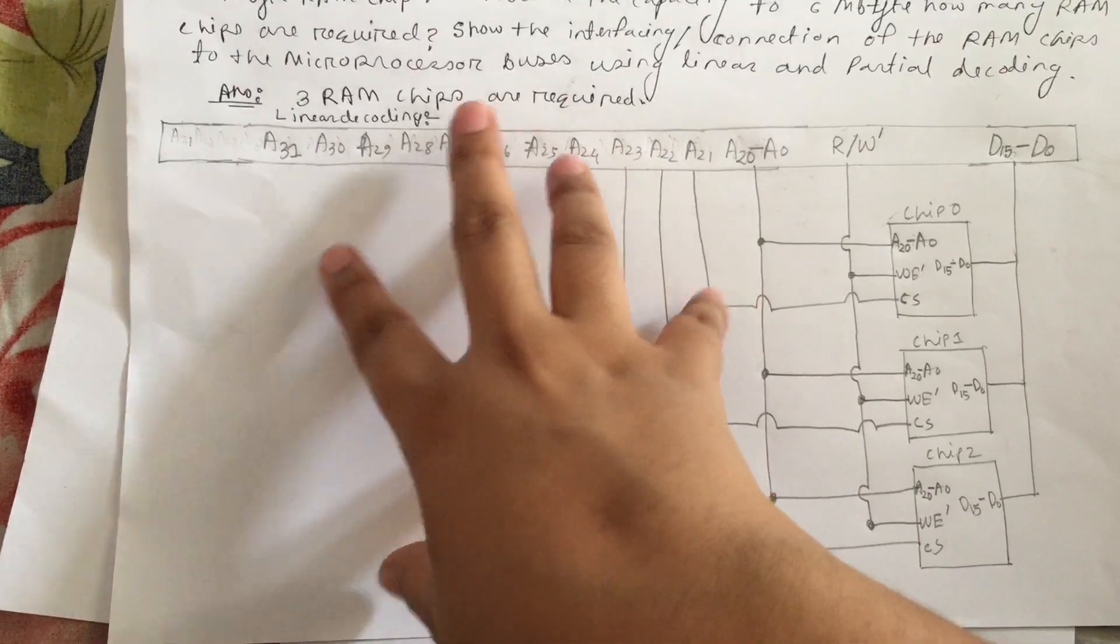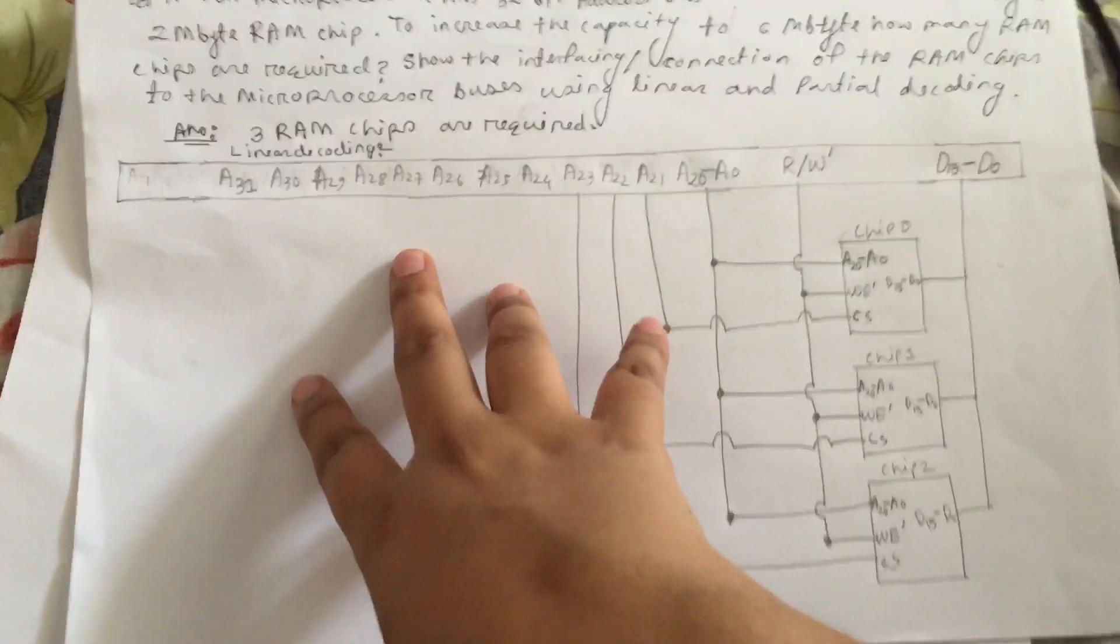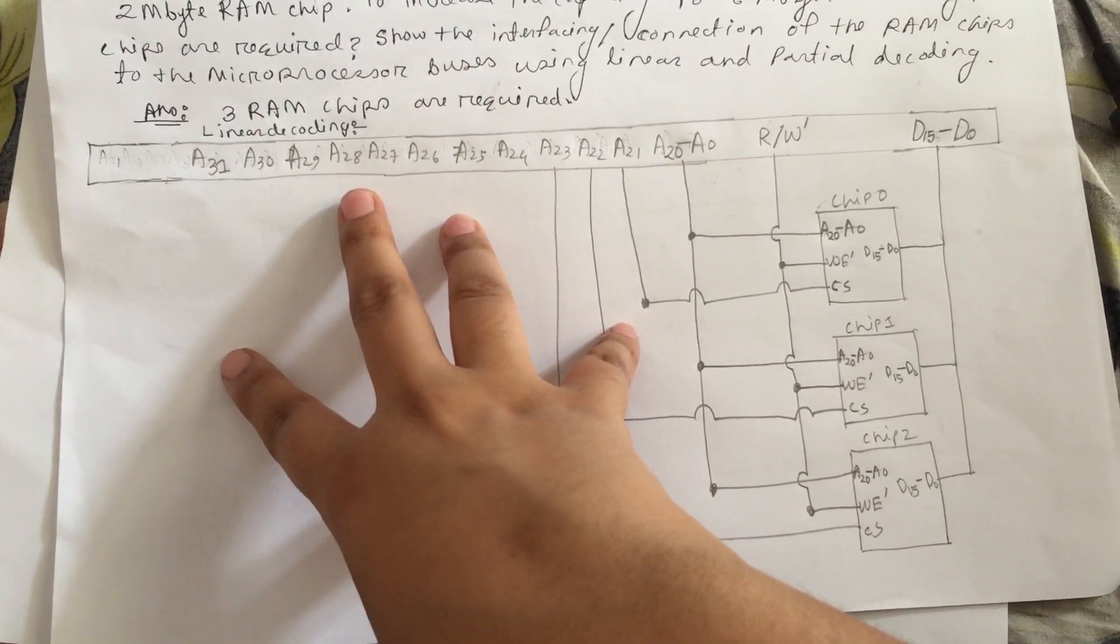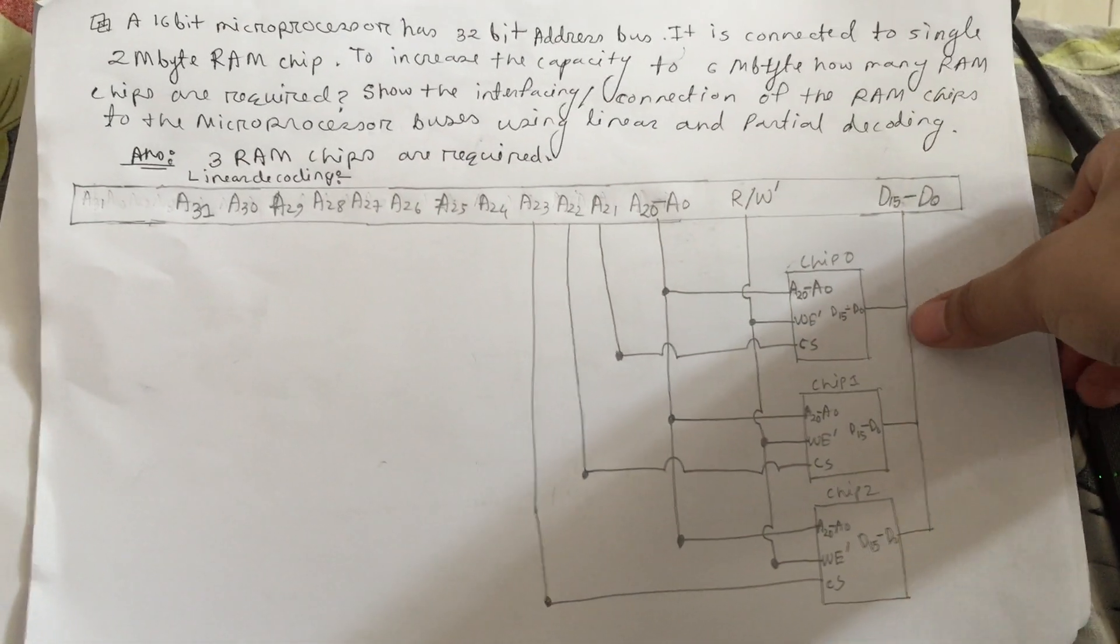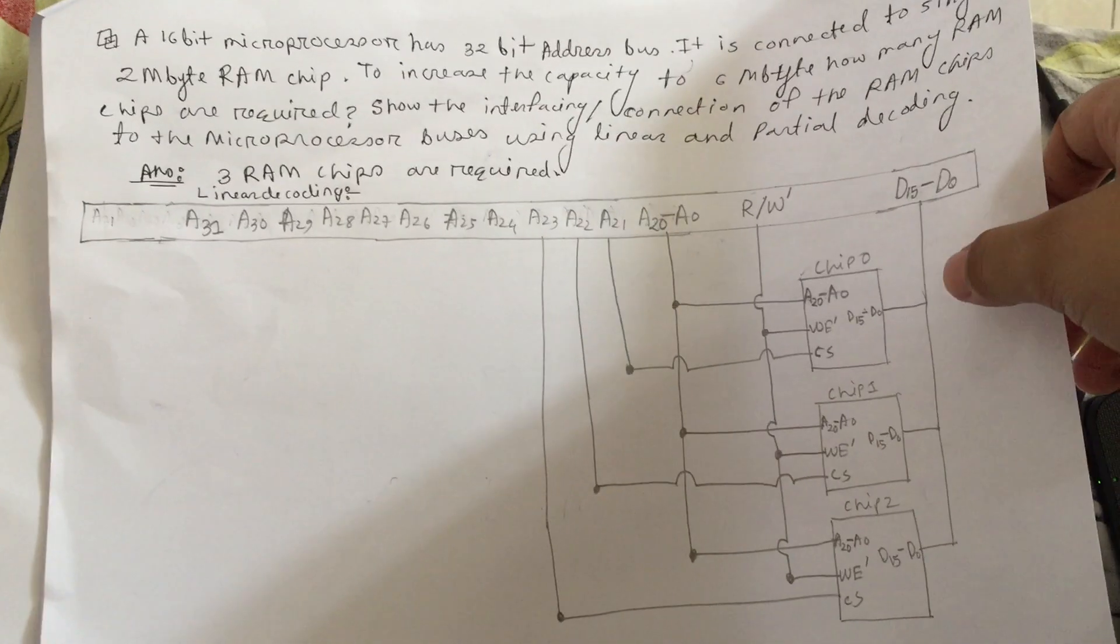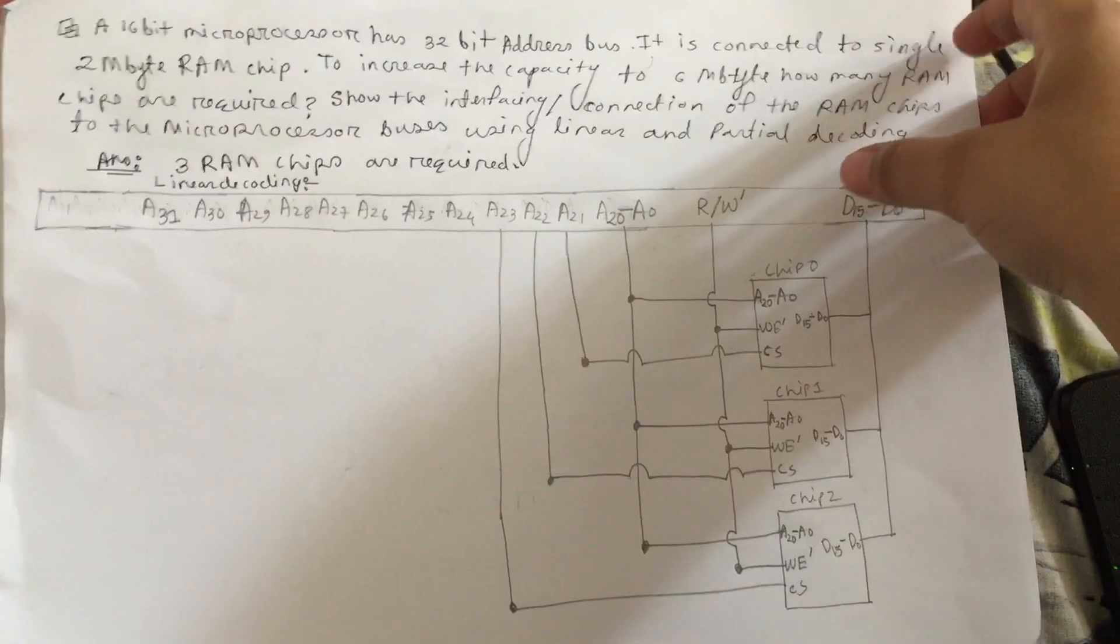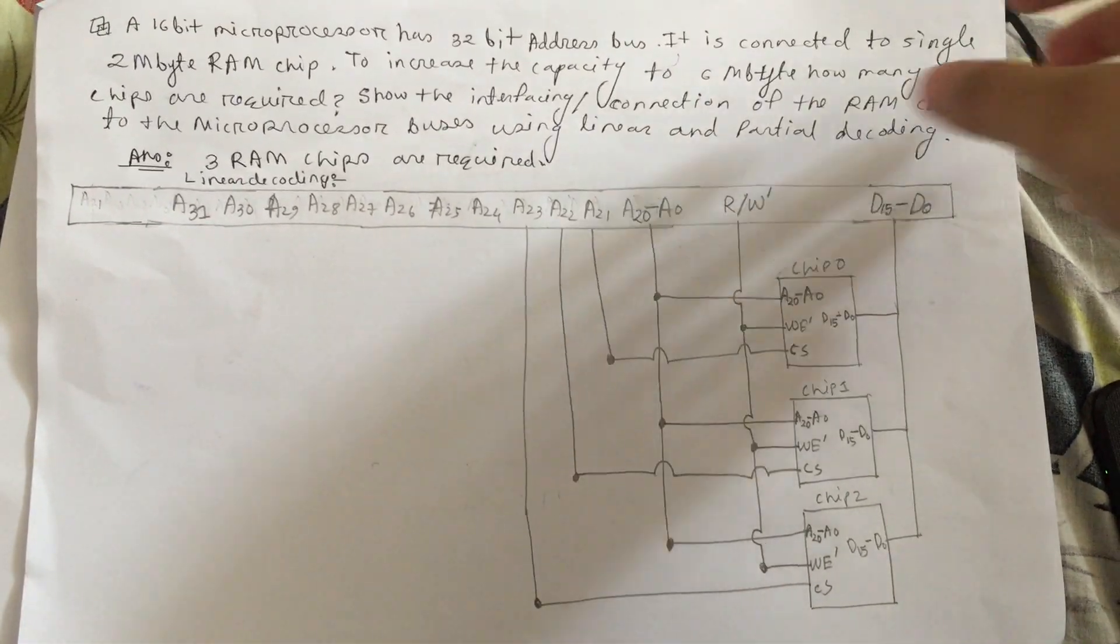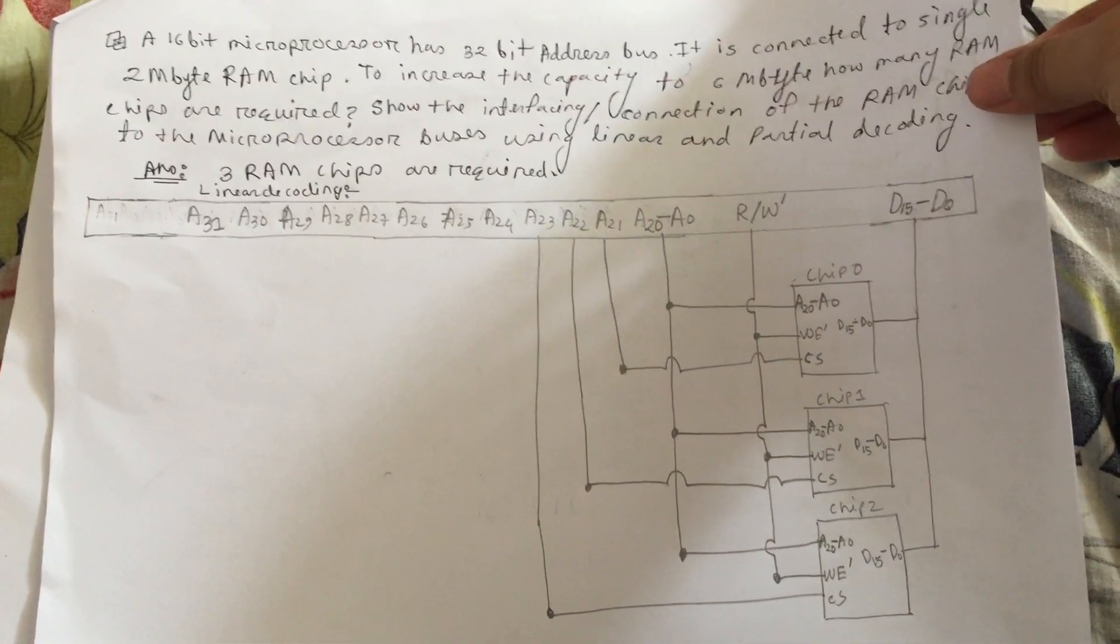This is the disadvantage of linear decoding: the resources are not being fully used. We will recover it in partial decoding, which I will show you in the second part.